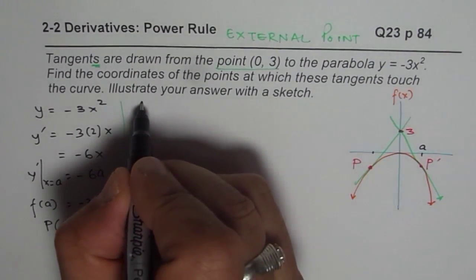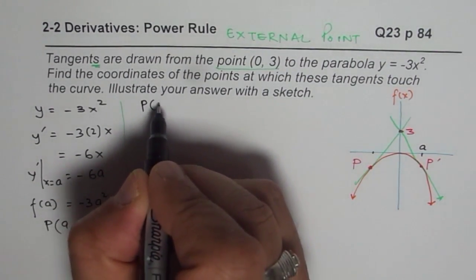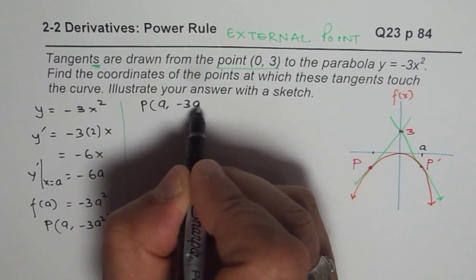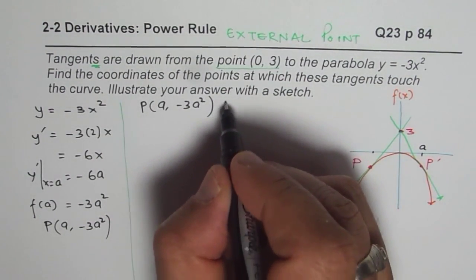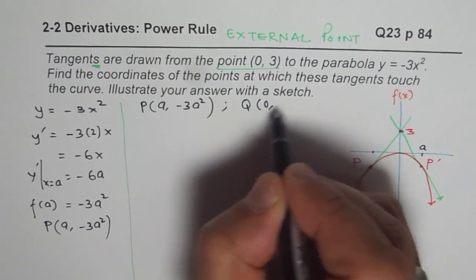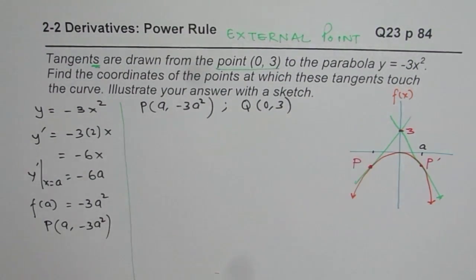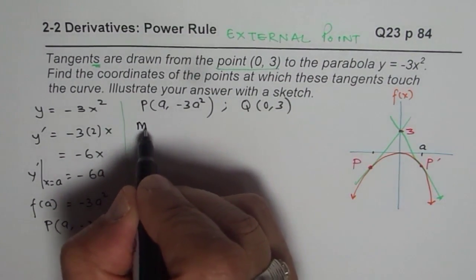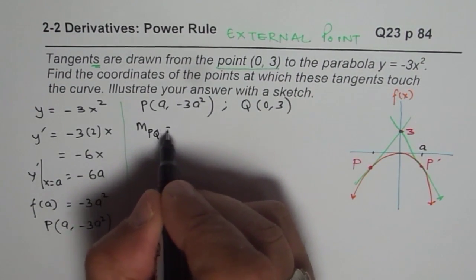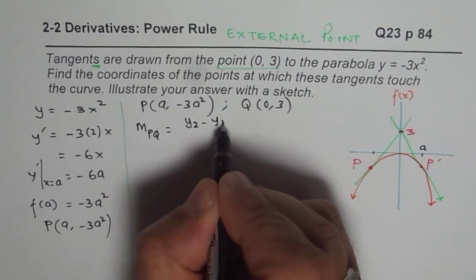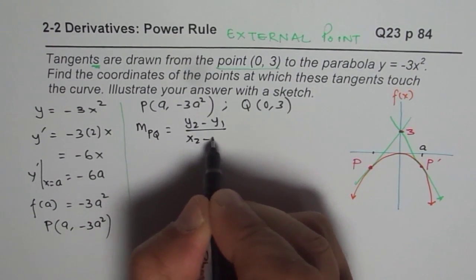Now, can you tell me what is the slope between a point which is (A, -3a²) and some other point which is given to us, let's call this Q as (0, 3). So what is the slope between these two points? We can use y₂ - y₁.